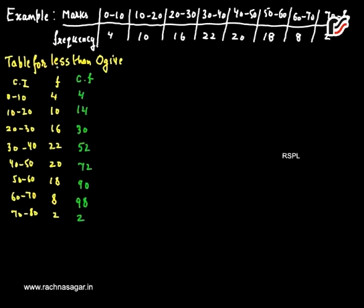Here we have the table for the less than ogive. Class intervals are the same from 0 to 80, and frequencies are the same as given. The cumulative frequency for the less than ogive is the frequency less than the upper class limit of each class. So 4 is less than 10, 14 is less than 20, 30 is less than 30, 52 is less than 40, 72 is less than 50, 90 is less than 60, 98 is less than 70, and 100 is less than 80.